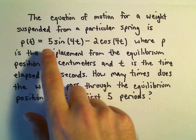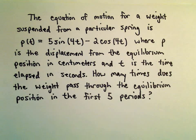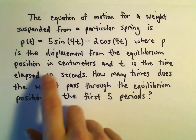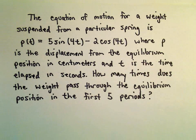We've got a weight that's suspended from a spring. Its displacement p is given by p(t) equals 5 sine of 4t minus 2 cosine of 4t. t is going to be time, and p is going to be the displacement from this equilibrium position in centimeters. We want to know how many times the weight passes through the equilibrium position in the first five periods.